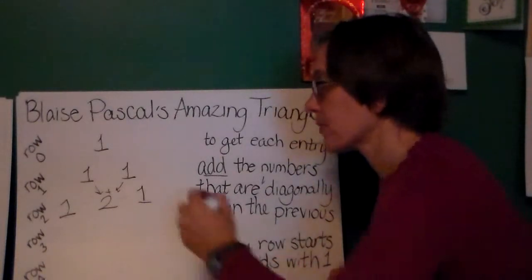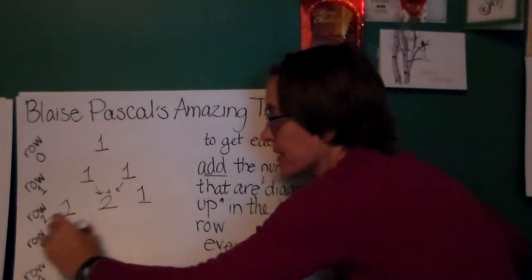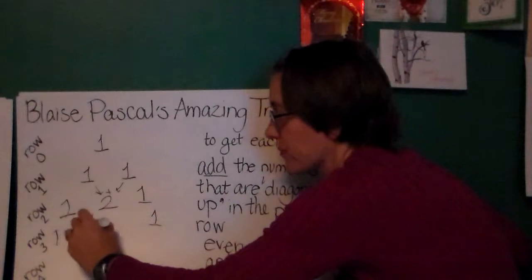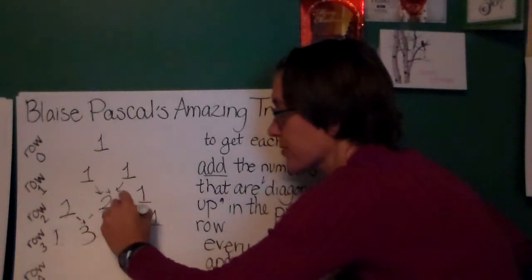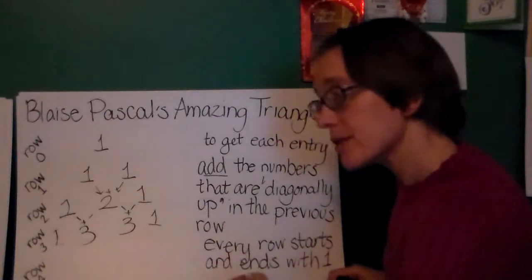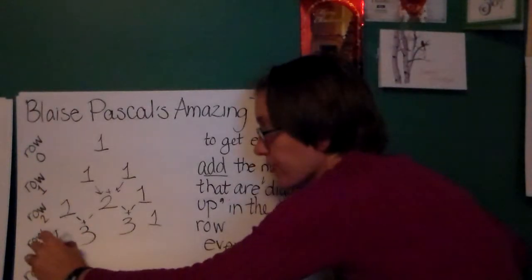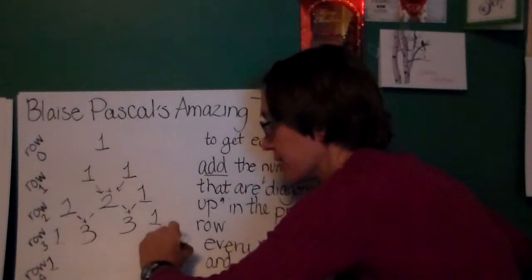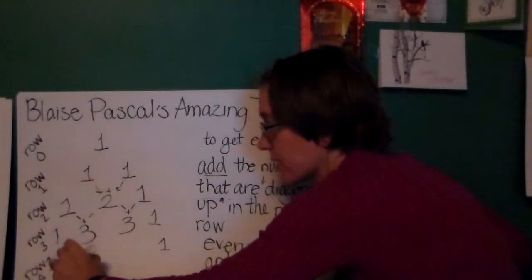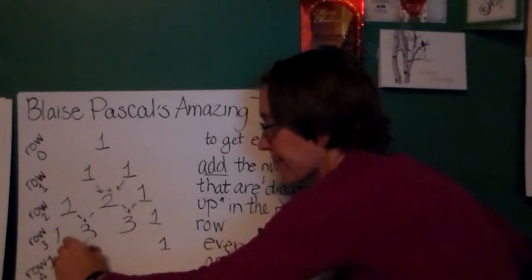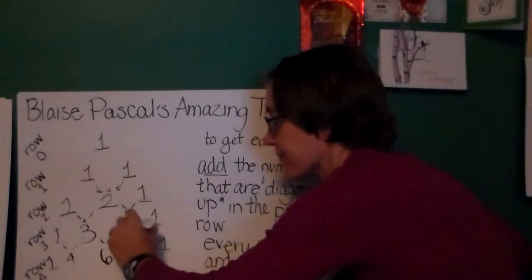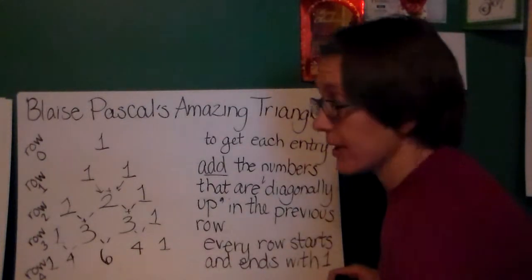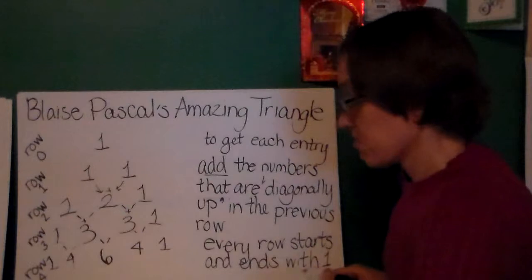1 plus 1 is 2. To get my third row, I can follow the same procedure. Start with the 1, end with the 1. To get my numbers in the middle, add together. 1 plus 2 is 3, 2 plus 1 is 3. And so on. My next row, row 4, I'm kind of starting to run out of room here. I'm going to push this 1 in. Another 1 over here at the end. It's 1, 4, 6, 4, 1. And we could go on: 1, 5, 10, 10, 5, 1, etc.